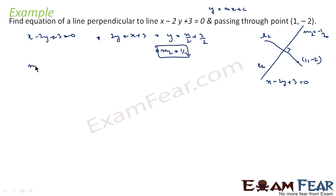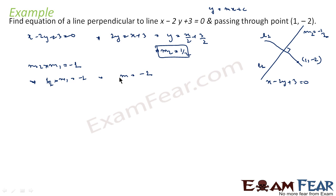Now, we know that m2 times m1 equals −1 for perpendicular lines. So (1/2) times m1 equals −1, which gives m1 equals −2. We now know the slope of line L1, which is m1 = −2.